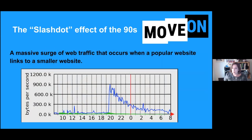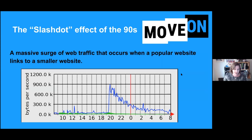Let's talk about the Slashdot effect. This was a nerdy nickname for website scaling events in the late 90s. It's when a website with significantly more engagement and viewership links to a smaller website with less viewership, and the resulting firehose of web traffic can often take the smaller website down. This is a classic late 90s graph — sort of like a baby picture for internet scaling.